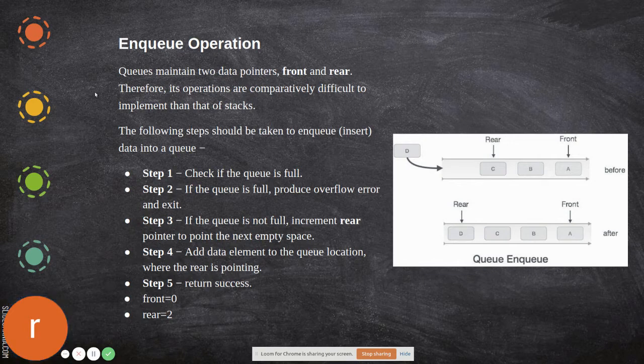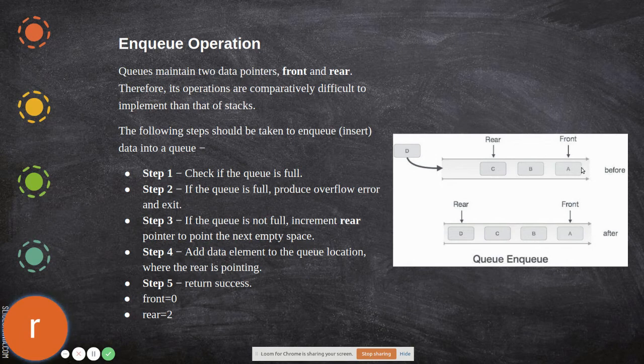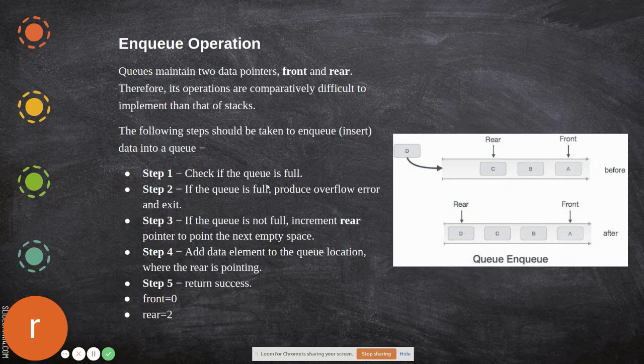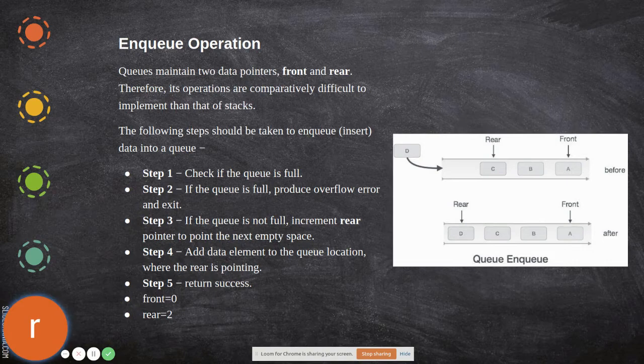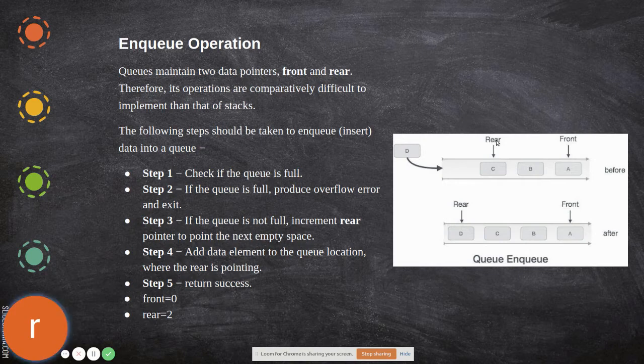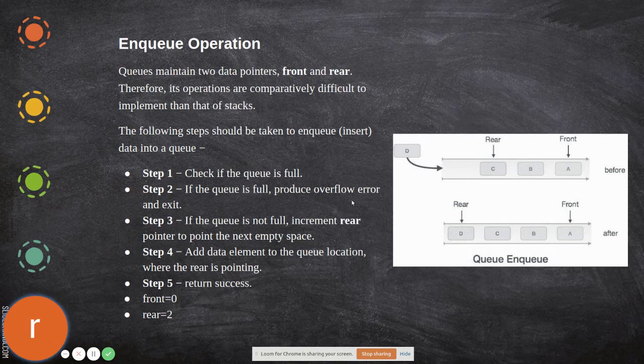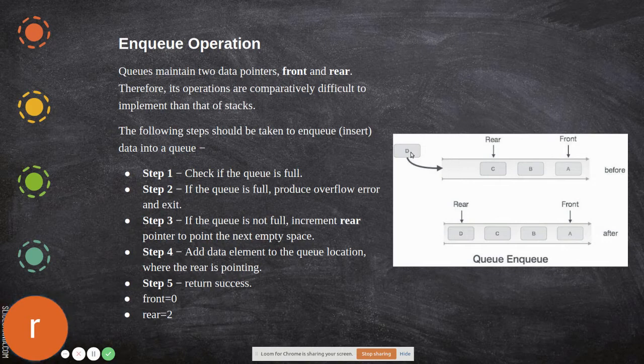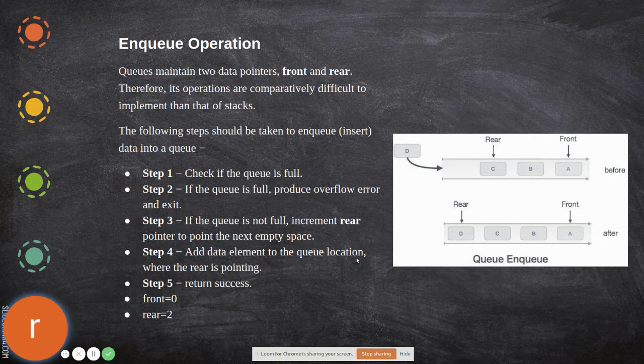For enqueue, before adding anything, first check whether there is any space in the queue. If the queue is full, it cannot be inserted - overflow. If there is space, first move the rear pointer to the next position, then add the incoming data at that position. If the queue is not full, increment the rear first, then add the data element to the queue location where rear is pointing, and return success.